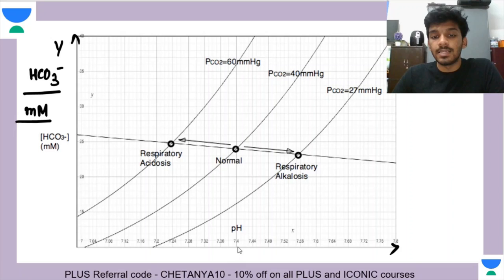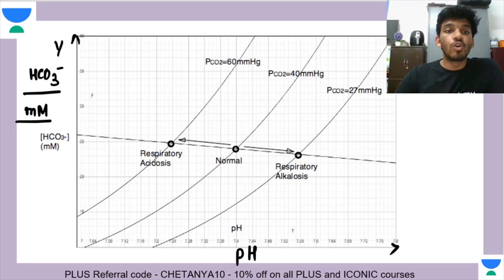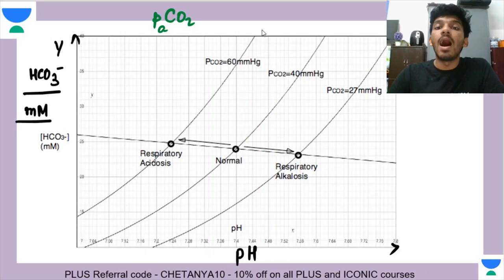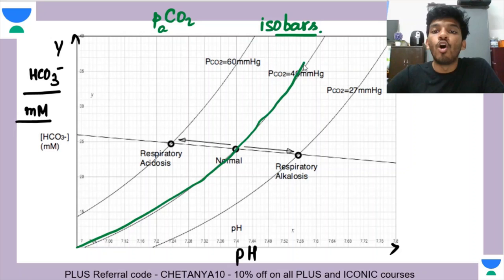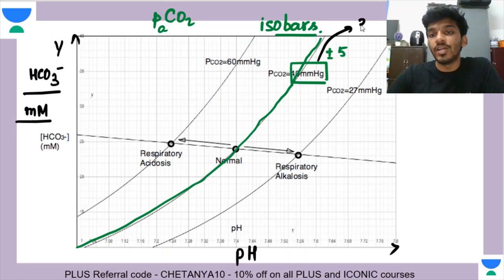On the X-axis you have the pH. Since you have pH on the X-axis, these two quantities are adequately represented. But whenever we talk about acid-base disturbances, there is always a third quantity — the partial pressure of carbon dioxide. For that, we have drawn certain lines called isobars. Why are they called isobars? Bar means pressure and iso means same, so along these lines the partial pressure of CO2 remains the same. Normally it is around 40 mmHg, within a range of 35 to 45.